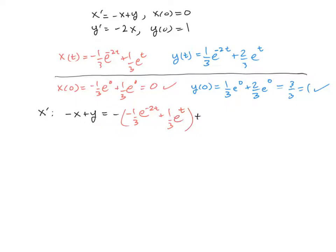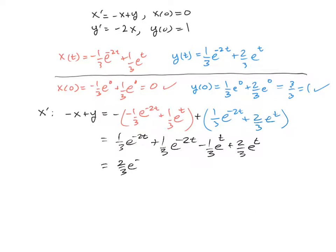which we know is 1/3 e^(-2t) plus 2/3 e^t. And if we now distribute and combine like terms, we're going to have positive 1/3 e^(-2t) plus the 1/3 e^(-2t). Now if we gather up the e^t's, we're going to have minus 1/3 e^t plus 2/3 e^t. And that will make a total of 2/3 e^(-2t) plus 1/3 e^t.